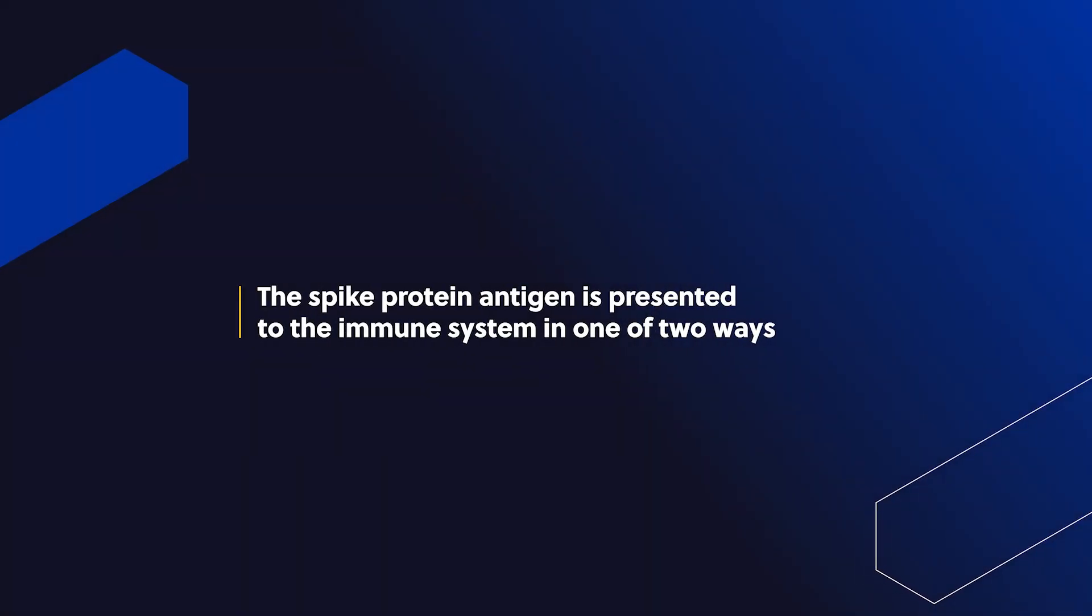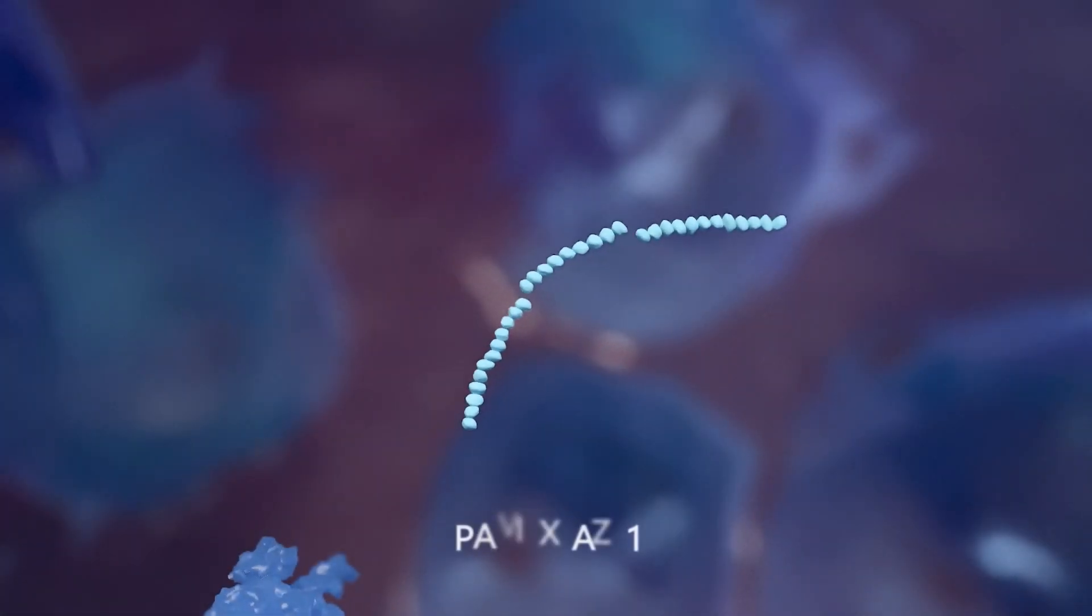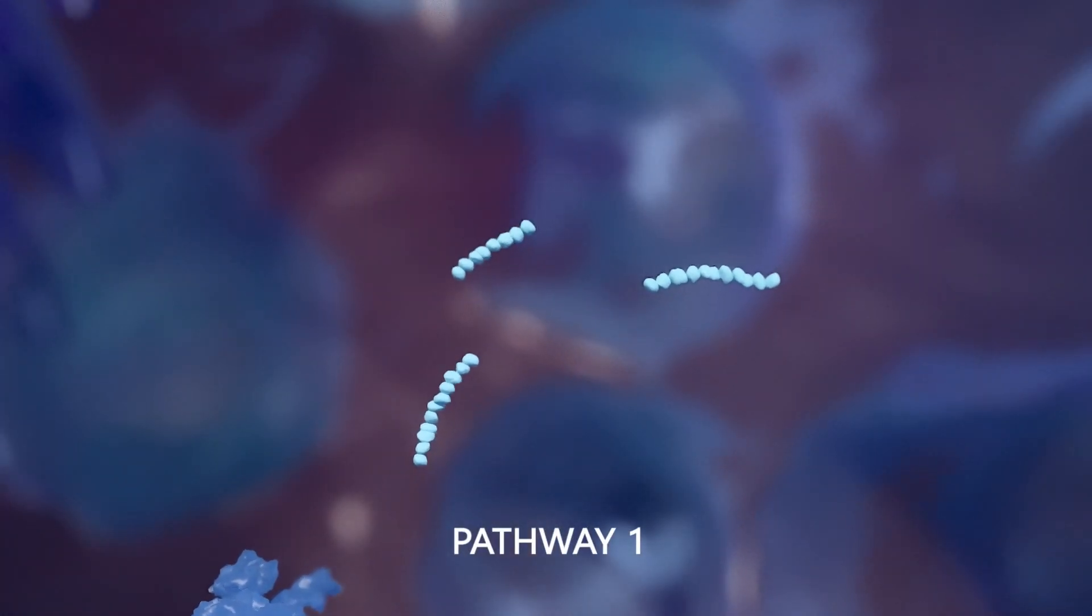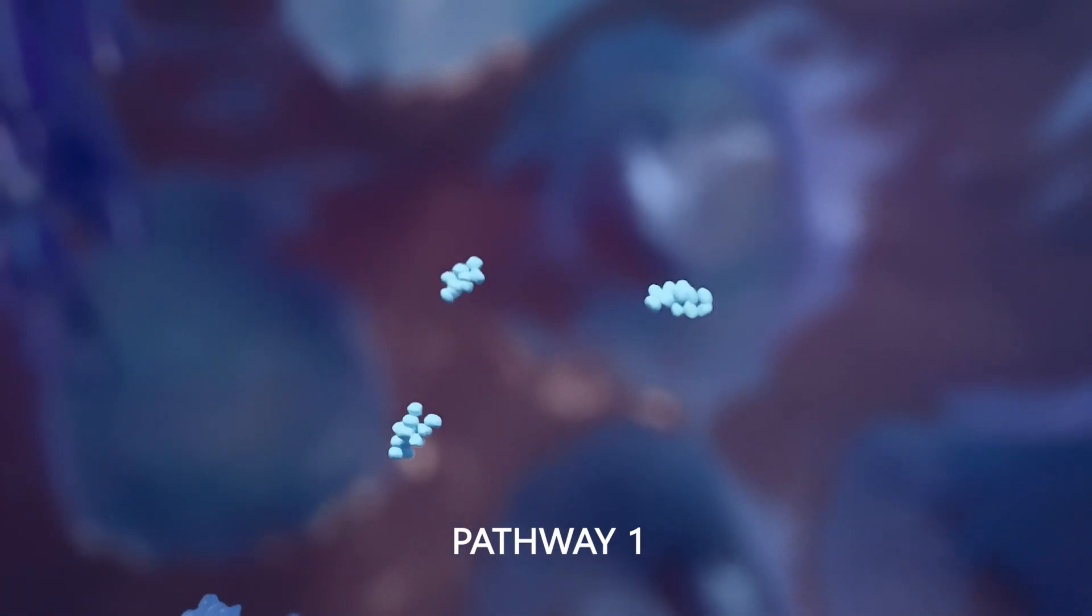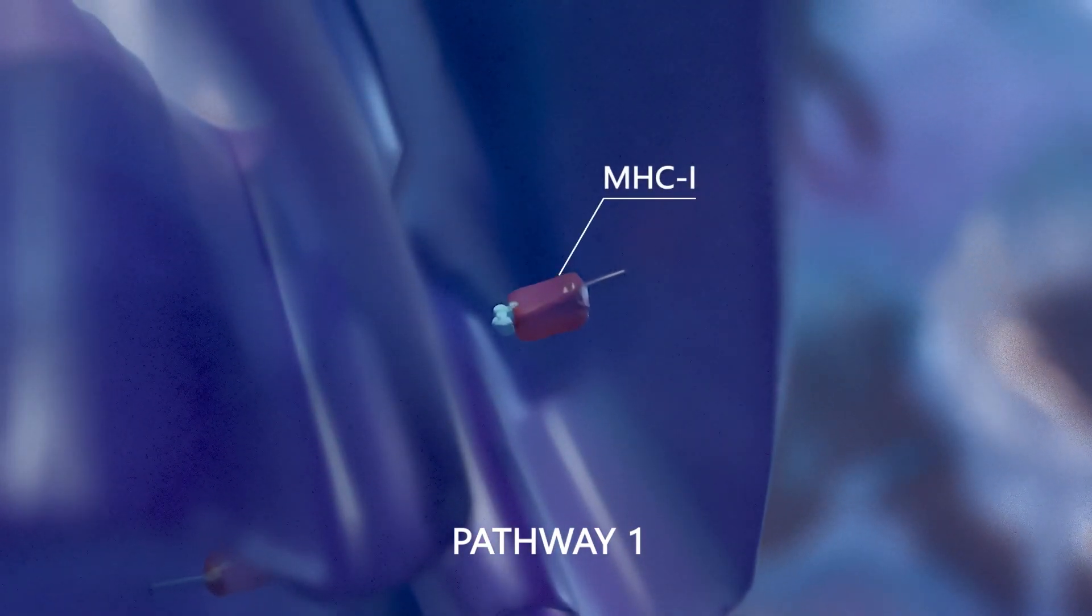The spike protein antigen is presented to the immune system in one of two ways. In the first pathway, it is broken into fragments, which are bound to another protein called MHC1.